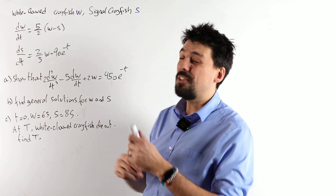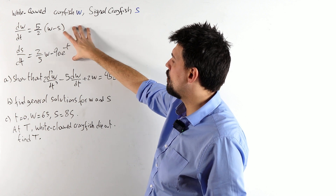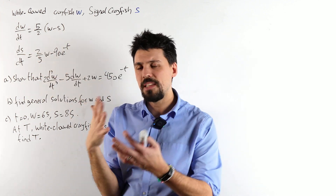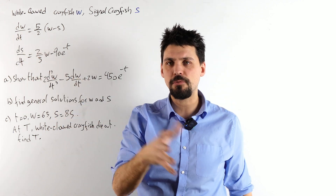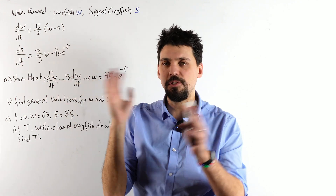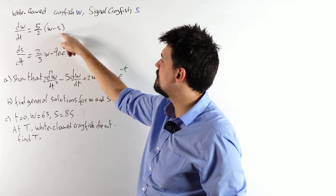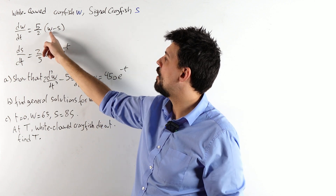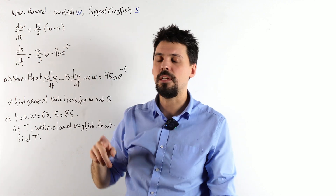What I do know is that we reckon their populations are governed by these two equations. Now I always like to have a little thought about the context of what's going on here. dW/dt — that is the rate of growth of W. 5 over 2 is just a constant. But W minus S — that's the difference between the two populations. If W increases, the rate of increase increases.